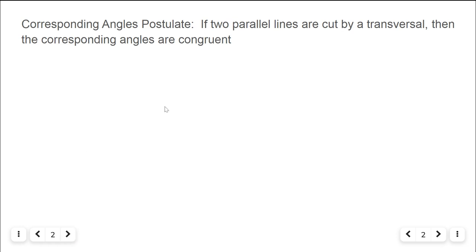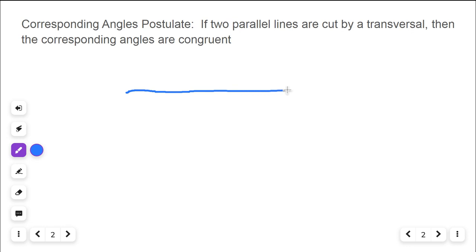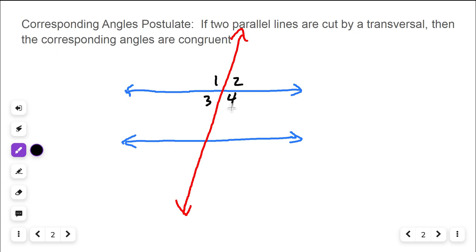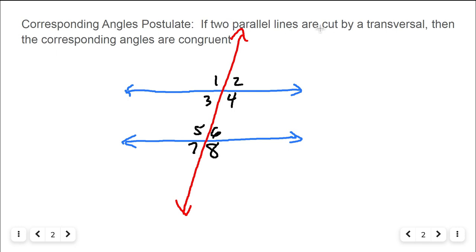The first thing we need to talk about is the corresponding angles postulate. If two parallel lines are cut by a transversal — I'm going to draw two lines that are parallel and then cut that with a transversal — that makes our eight angles here. Then the corresponding angles are congruent.